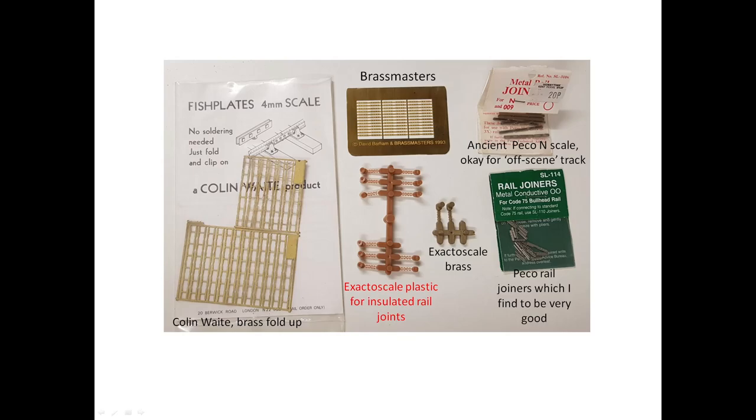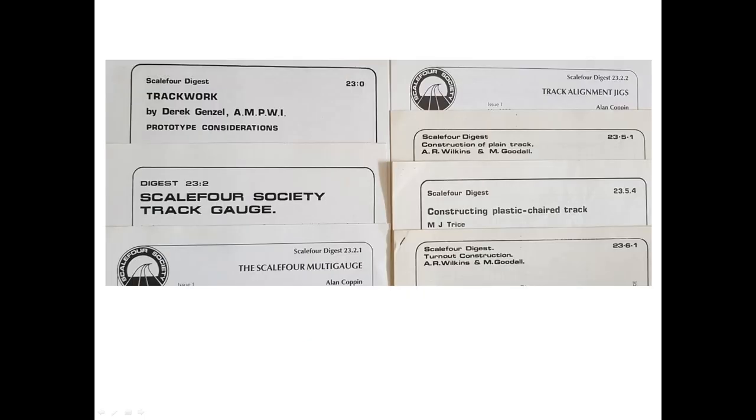Here we see a range of fish plates. The plastic versions are used where an insulation gap is needed between adjacent rail ends. I've used a lot of the old Pico N-scale joiners on my off-scene track. The Scale4 Society digest sheets tell you all that you need to know about track building. It's well worth joining the Society for these and for access to the stores and newsletter.